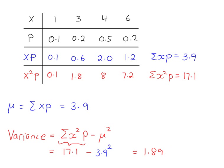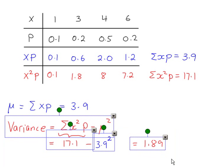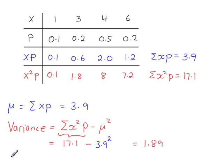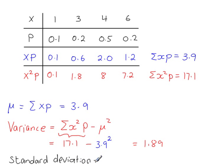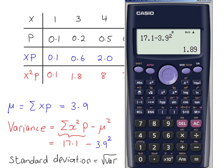That's the variance. And if you were looking for the standard deviation, you know that you just square root the variance. The square root equals 1.37.